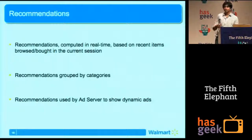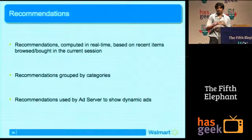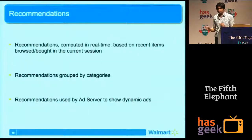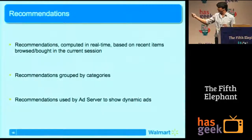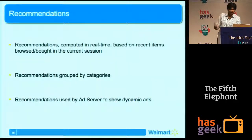We also group recommendations by categories. We don't want to show an ad with a pair of jeans, a TV, and a camping tent in it. We group items into similar categories so that the ad looks much more coherent. This recommendation, computed in real time, is used by the ad server to show the ads.